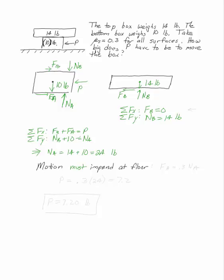Motion has to impend because that's what we're looking for. So FA is 0.3 times NA. FA is equal to P and NA is equal to 24. So P is 7.2, P is 7.20 pounds.